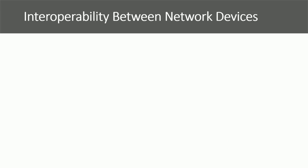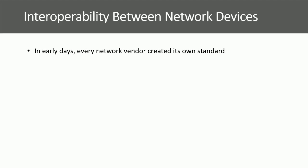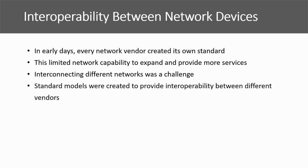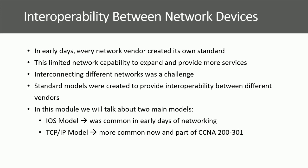When connecting all these devices to a network, there is a challenge of interoperability, which means we need a common language or standard — protocols — that manage communication between devices. In early days, every network vendor created its own standard, resulting in isolated networks. This limited network capability to expand and interconnect. Later, independent organizations started creating standards and models to provide interoperability between different vendors. I will talk mainly about two models: the OSI model, which was common in early days, and the TCP/IP model, which is more common now and is part of the CCNA 200-301 exam.